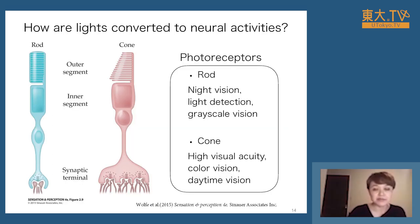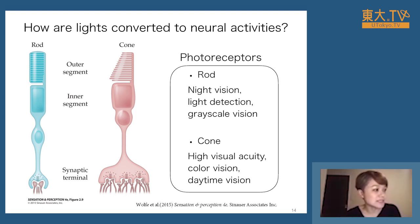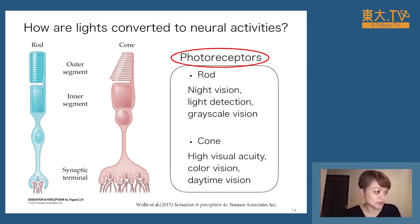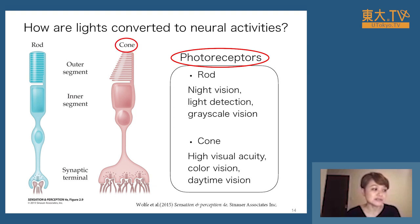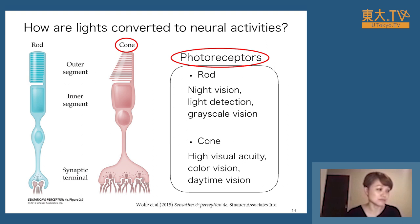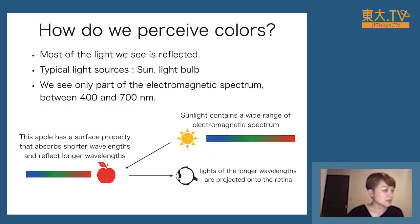As I said, converting light into neural activities is the work done by photoreceptors. There are two types: rods work in night vision when it's dark — they detect light but don't see colors. Cones, on the other hand, have really high visual quality, can see details and colors, and work in the daytime with lots of light. So how do we perceive colors?